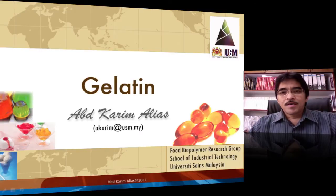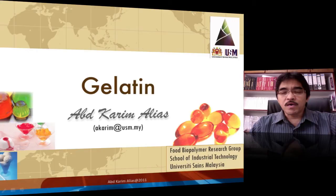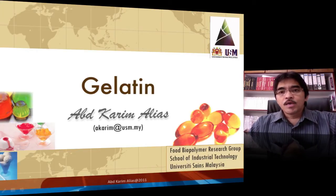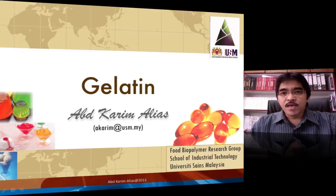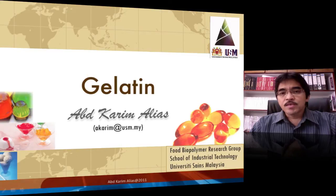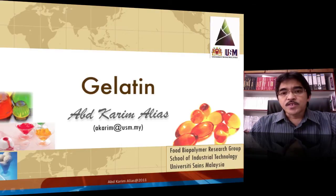Before we start this new lesson, let me briefly revise what we have covered so far in the topic of gums and stabilizers. We have learned about various types of hydrocolloids, all of which are derived from plants. For example, agar, carrageenan, and alginate are derived from seaweed; locust bean gum from locust bean; gum arabic from the acacia senegal tree; and pectin from apple pomace. In this lecture, let me introduce the only type of hydrocolloid derived from animal.